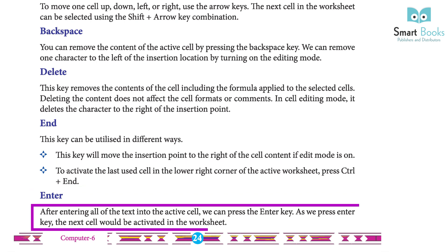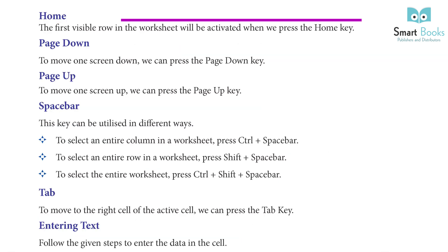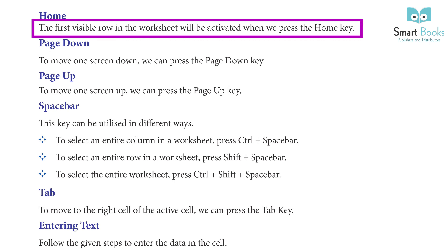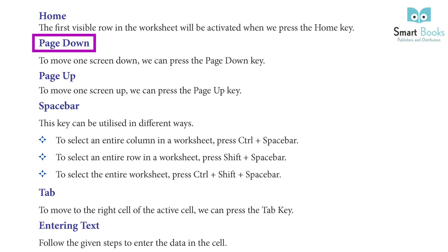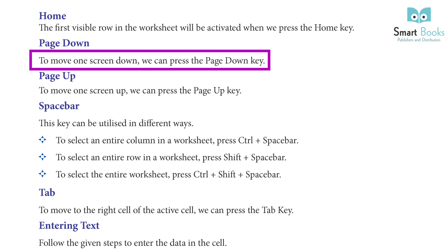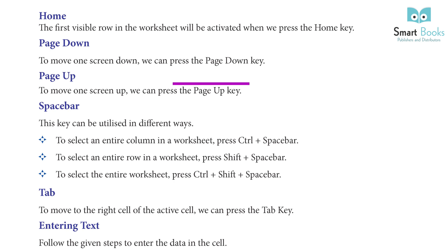Enter: after entering all the text into the active cell, we can press the Enter key. As we press the Enter key, the next cell would be activated in the worksheet. Home: the first visible row in the worksheet will be activated when we press the Home key. Page Down: to move one screen down, we can press the Page Down key. Page Up: to move one screen up, we can press the Page Up key.